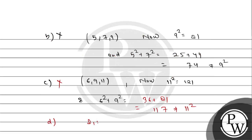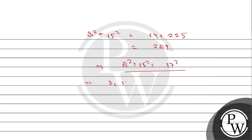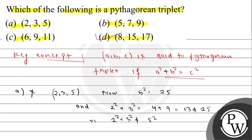We will check option D: 8, 15, 17. How much is 17 squared? It is 289. Now 8 squared plus 15 squared: 8 squared is 64, 15 squared is 225, and 225 plus 64 is 289, which equals 17 squared. So this implies 8, 15, 17 is a Pythagorean triplet. Thank you.